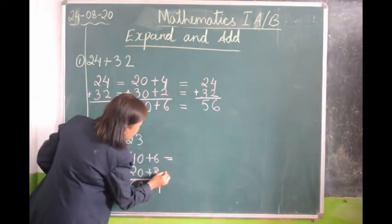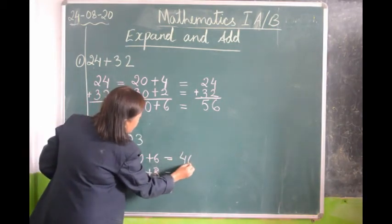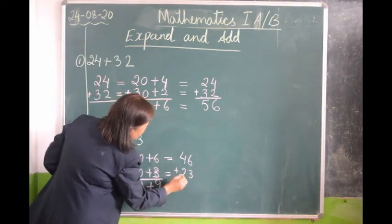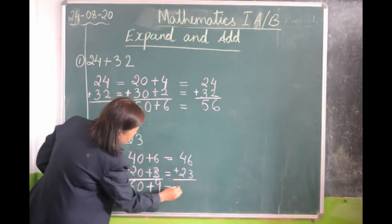Equals to sign. 40 plus 6 is 46. 20 plus 3 is 23. We will put the sign and we will add. 60 plus 9 is 69.